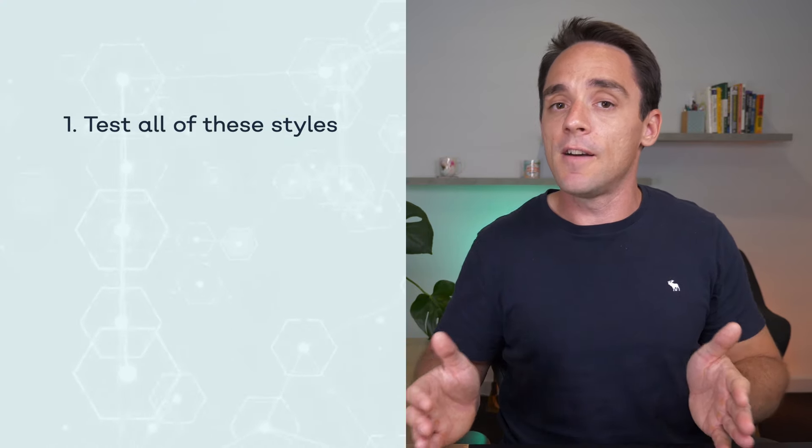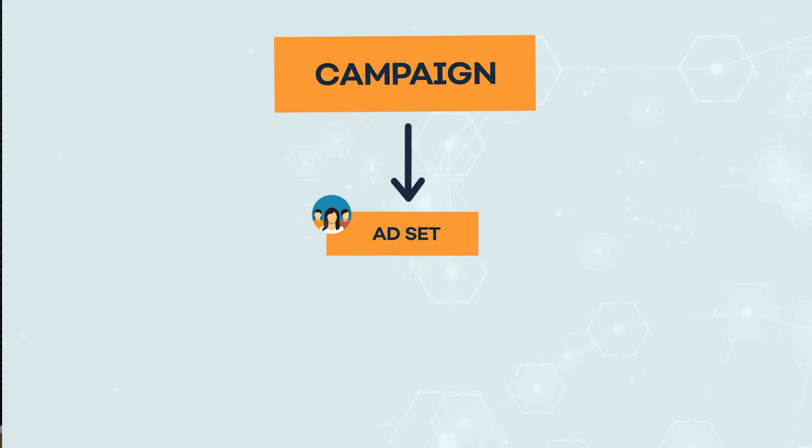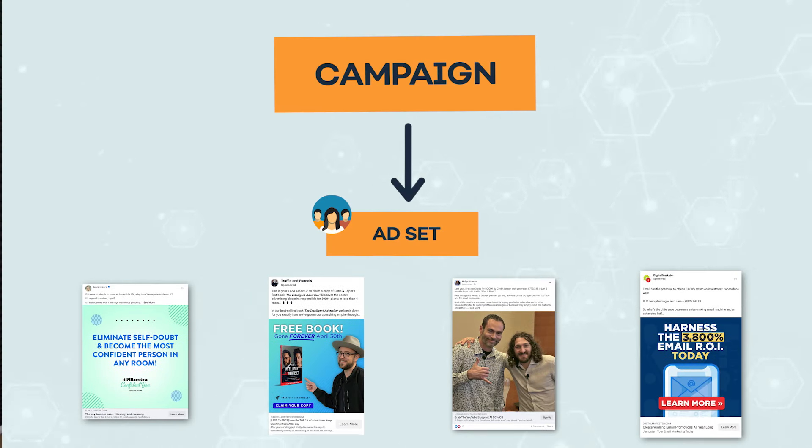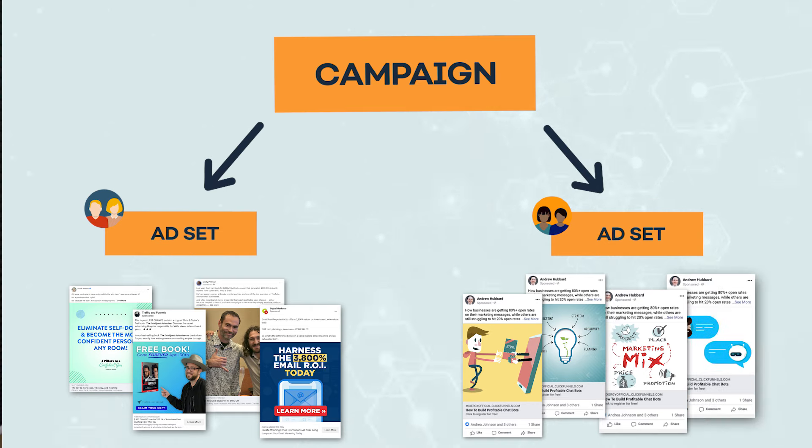When you roll out and start testing these, the reason I say to test all of these different styles is because you'll notice that for some ad accounts, some styles work particularly well and others don't. On a different account with a different product or brand, a completely different style will outperform the rest. So it's important to test all of these styles, find what works best for you, and then double down on that. I'll go into an account, set up a campaign, test all of these different styles, see which style performs best for that brand and account, and then go and get many more creatives made that match that same style.